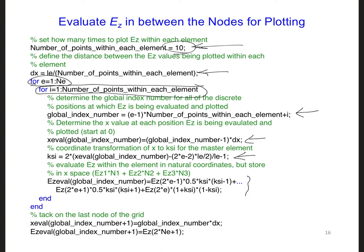Now for this psi, this is from what we had earlier for the coordinate transformation. x minus x1 of the element over x2 for the element minus x1 for the element minus 1. And so the denominator here is also just le. And then here we're just tacking on the very last node of the grid.